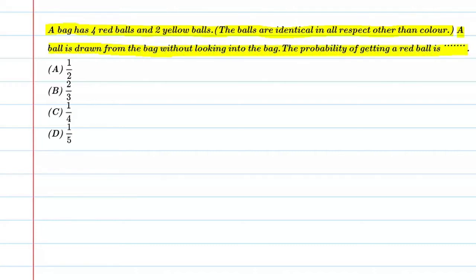So students, basically this question has said that a bag has four red balls and two yellow balls and all the balls are identical in shape except for the color. So let us know that if we remove a ball without looking into the bag, then what is the probability of red ball?